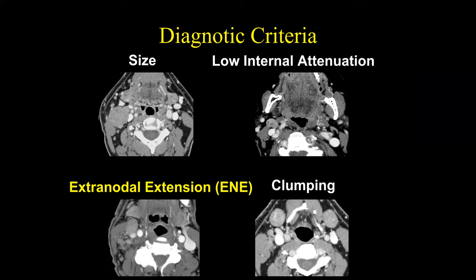The diagnostic criteria we use include: size, low attenuation, clumping of lymph nodes, and extranodal extension. Regarding low attenuation — small focal areas of low attenuation in the periphery represent small metastatic deposits. With clumping, multiple lymph nodes on the ipsilateral side of a head and neck cancer — with none on the opposite side — would cause us to upstage that lymph node involvement, indicating likely metastasis.